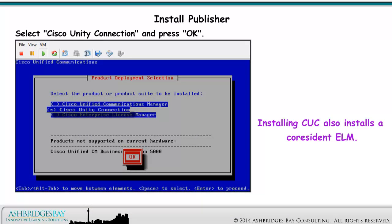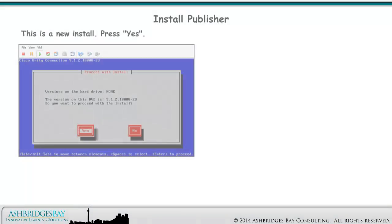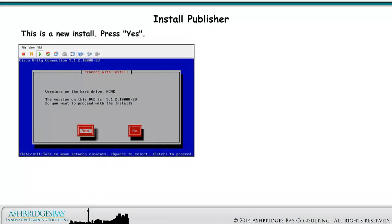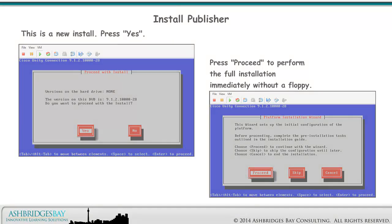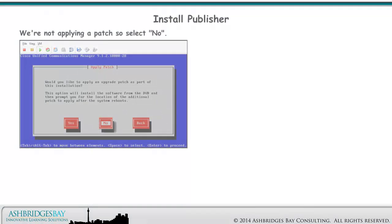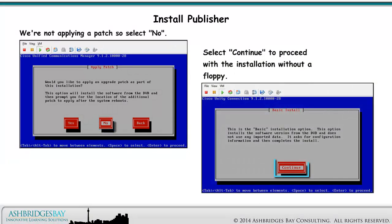Installing CUC also installs a co-resident ELM. This is a new install — press Yes. Press Proceed to perform the full installation immediately without a floppy with the platform configuration. We're not applying a patch, so select No. Select Continue to proceed with the installation without a floppy.